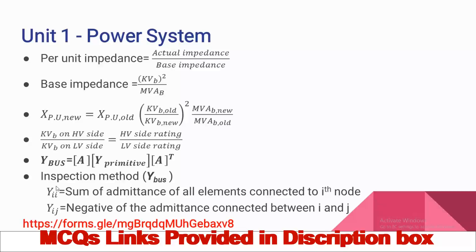In the inspection method, the diagonal element Y-ii is formed by summing the admittances of all elements connected to the i-th node. If an impedance value (Z = R + jX) is given, take the reciprocal to get the admittance and add it. The off-diagonal elements — Y12, Y13, etc. — are calculated as the negative of the admittance between node i and node j.